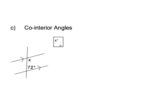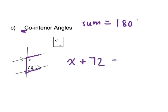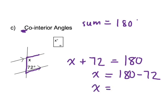Co-interior angles — just think of the letter C. If we draw the letter C, co-interior angles states that the two angles on the interior of the C add up to 180 degrees. To find X, we subtract: 180 minus 72 equals 108 degrees. And those are the properties of angles.